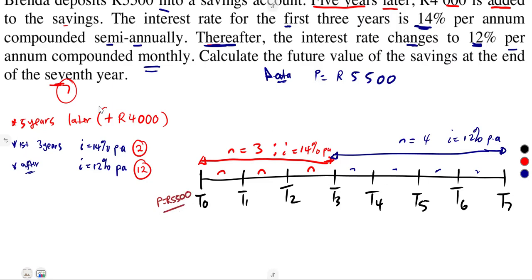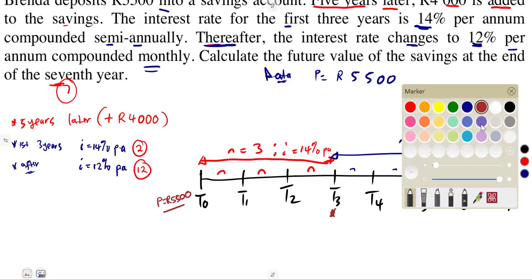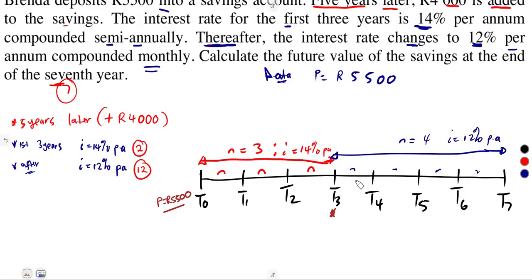Let's analyze the deposit. For the first three years everything is fine — the interest was growing, nothing else happened. At the end of the three years, what changed was the rate at which the money was increasing. The interest rate is now at 12%, so from year 3 onward we are at 12%.